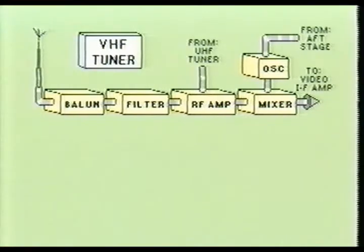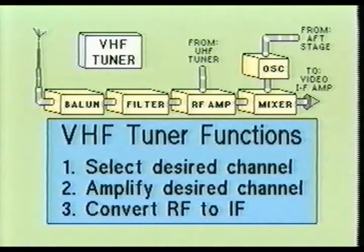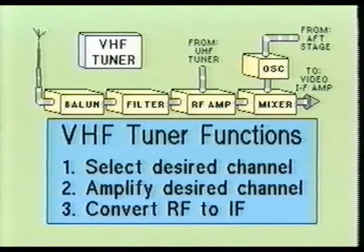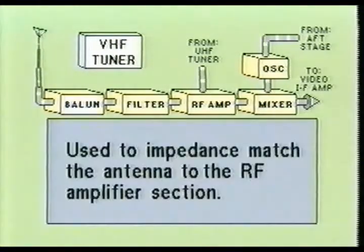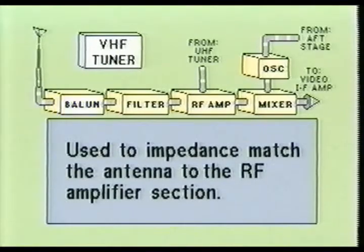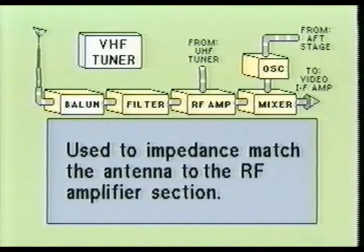Here you see a block diagram of a typical VHF tuner. The primary function of the VHF tuner is to select the desired channel, amplify the selected channel, and change the incoming radio frequency signal to a much lower intermediate frequency value. The Balun transformer is used as an impedance matching device between the antenna and the input of the RF amplifier stage. The Balun transformer plays a key role in reducing the electrical noise caused by the antenna line. Here you see a Balun transformer with a step-up ratio of 1 to 4, called a toroidal coil Balun, which is a coil wrapped around a donut-shaped core made of ferromagnetic material. The primary advantage of the toroidal coil is that all magnetic flux is contained within the core material.